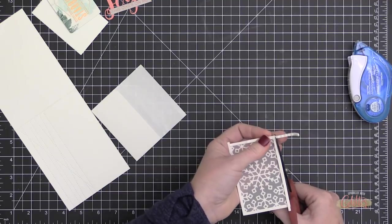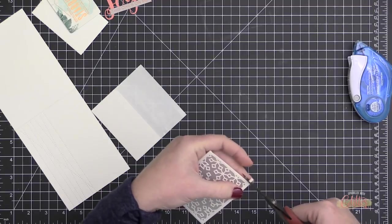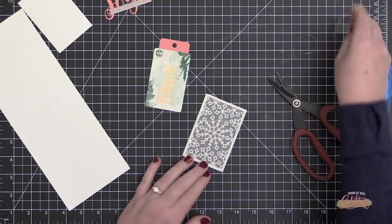I'm going to do that on three sides—I'm going to leave the top open so that I can slide my gift card in. I had a little excess so I'm just trimming that off with my scissors.